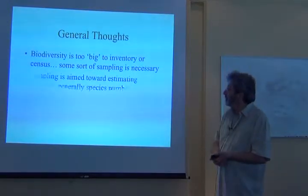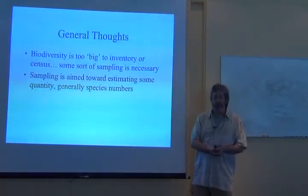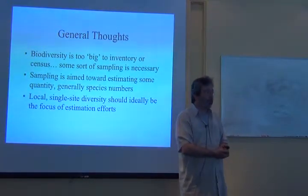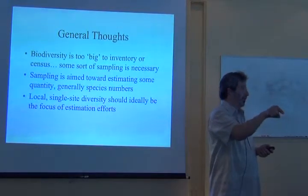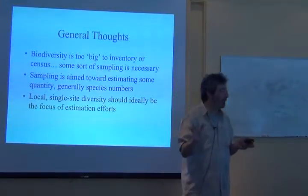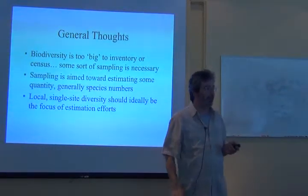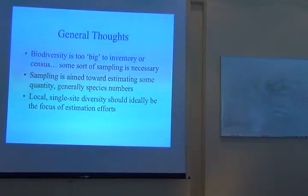So the question is, how do we get that confidence that our inventory is complete? That's essentially the challenge. Sampling is aimed towards estimating some quantity, and generally it's going to be species numbers. I would argue that the best thing we can do is make sure that we get our single-site house in order first. Does everybody know the difference between alpha, beta, and gamma diversity? Alpha is point diversity. Beta is our change from moving from one point to another. And gamma is — increasing scale — just the sum of alpha and beta, the combination of them.